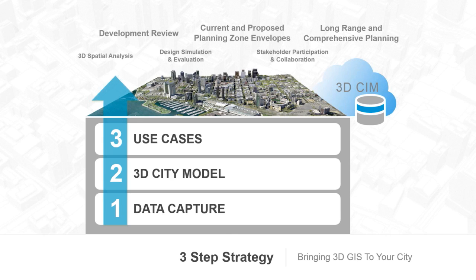Step one: really evaluating your data and importing your data, knowing what you have to get started. Step two: building this into a manageable, shareable 3D city model — a base scene, something initially created sometimes with the help of a partner like we've seen today. And finally, it's important to have a clear use case in mind when going through these steps. 3D GIS isn't just about seeing in 3D — it's really about understanding. And once this 3D city model is built out, it's possible to leverage it further within different departments for different use cases.